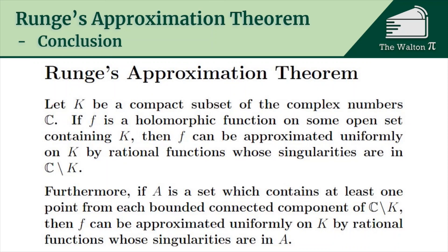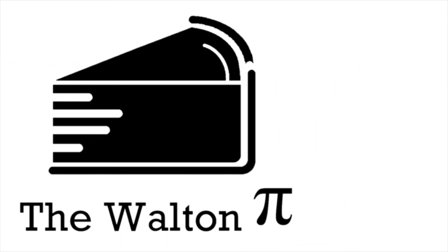We have successfully proven all parts of Runge's approximation theorem — our complex analysis version of the Weierstrass approximation theorem. If K is a compact subset of the complex numbers and f is holomorphic on an open set containing K, then f can be approximated uniformly on K by rational functions whose singularities are in the complement of K. Furthermore, if A is any set containing at least one point from each bounded connected component of the complement of K, then f can be approximated uniformly by rational functions with singularities in A — we can pick exactly where those singularities go. I hope this video was helpful. Have a great rest of your day and good luck with all of your math.